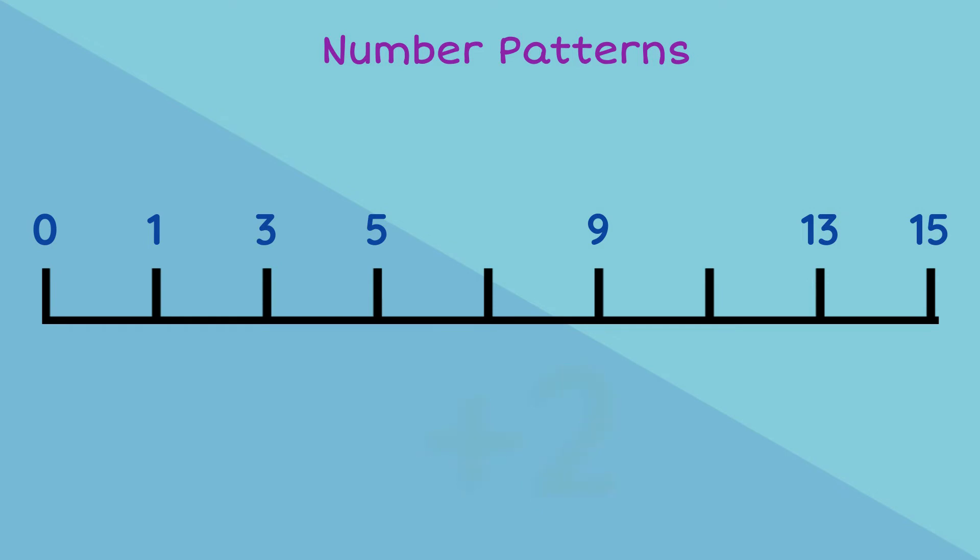So our missing numbers would be 7 because we add 2 to 5, and then 11 because we add 2 to 9.